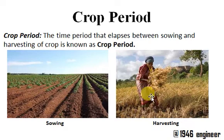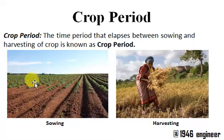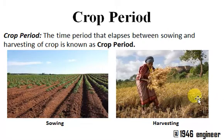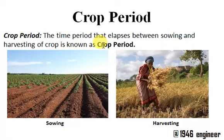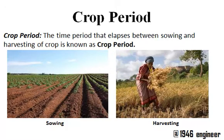Sowing is what you do after the preparation of the land — you sow the seeds and you will get the crop. Harvesting is when the crop reaches maturity and you cut the crop. So the time period that elapses between sowing of a crop and harvesting of a crop is known as crop period.